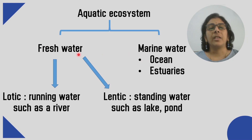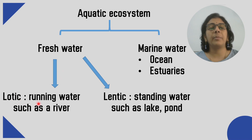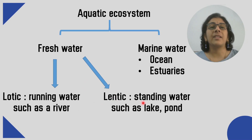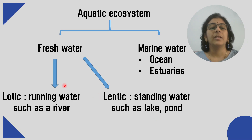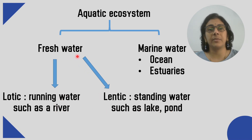The fresh water ecosystem can be further divided into Lotic, where there is running water such as a river, and Lentic, where there is standing water such as a lake or pond. So river, lake, and pond are all examples of fresh water ecosystems — Lotic and Lentic.